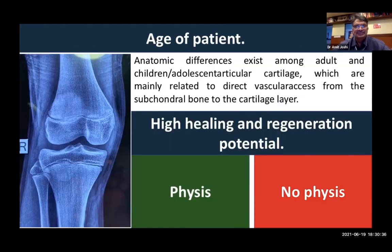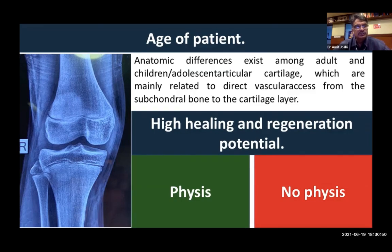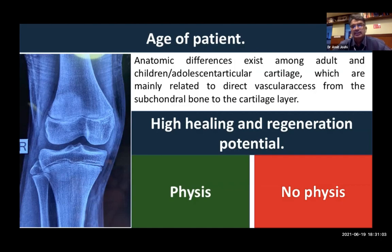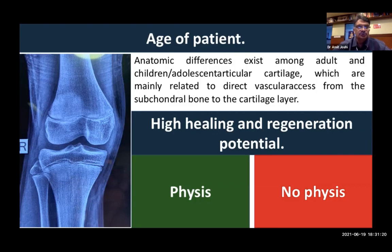Age of the patient is very important. In pediatric and adolescent patients, blood vessels cross the physis and the tide mark, providing vascularity into the deeper cartilage. This means pediatric and adolescent cartilage is more vascularized, giving it better healing and regeneration potential. However, when treating younger patients you must think about the physis and the distance of the injury from it. In adults there is no physis, so devices can cross freely without issue.